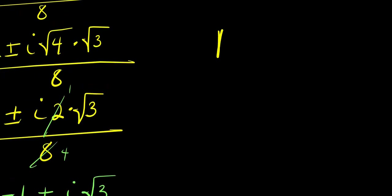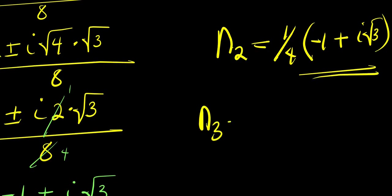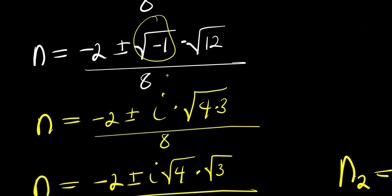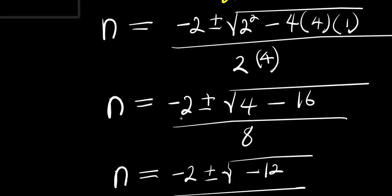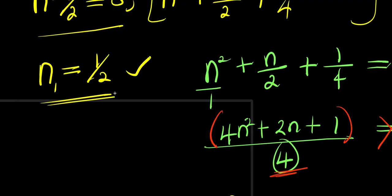So we have two complex values for n: n₂ equals (1 over 4)(negative 1 plus i√3) and n₃ equals (1 over 4)(negative 1 minus i√3). We also have one real value for n, which is n₁ equals 1 over 2.